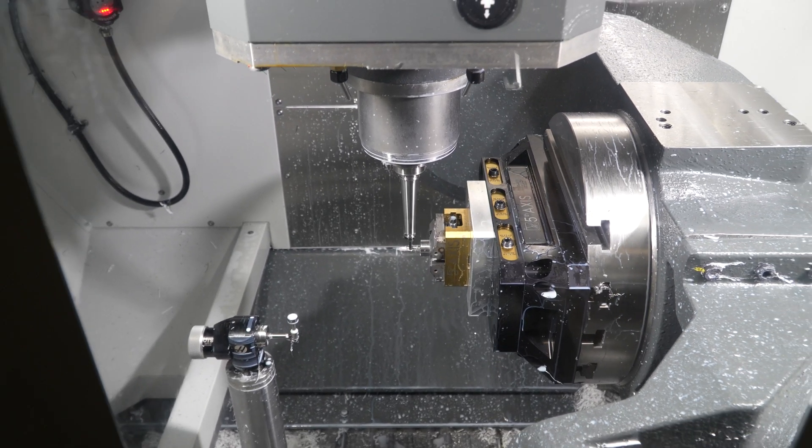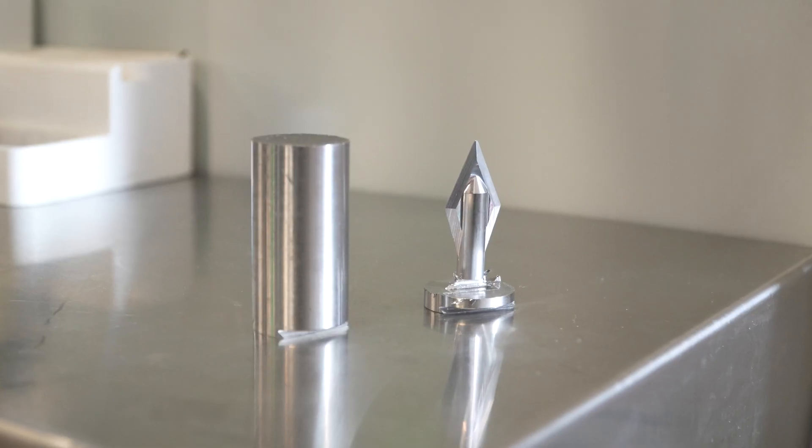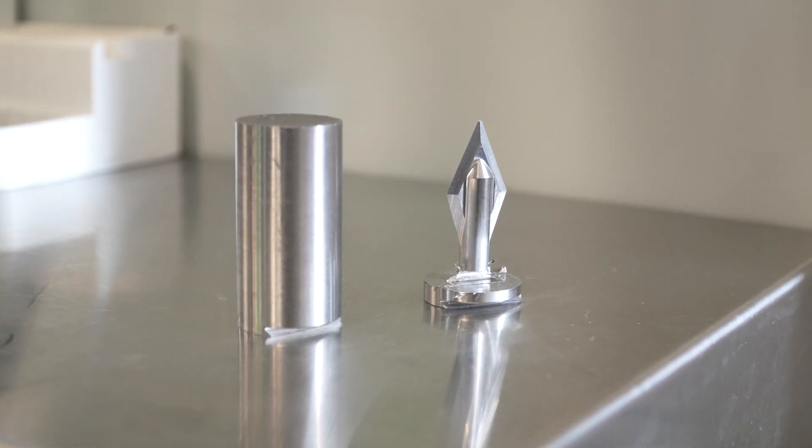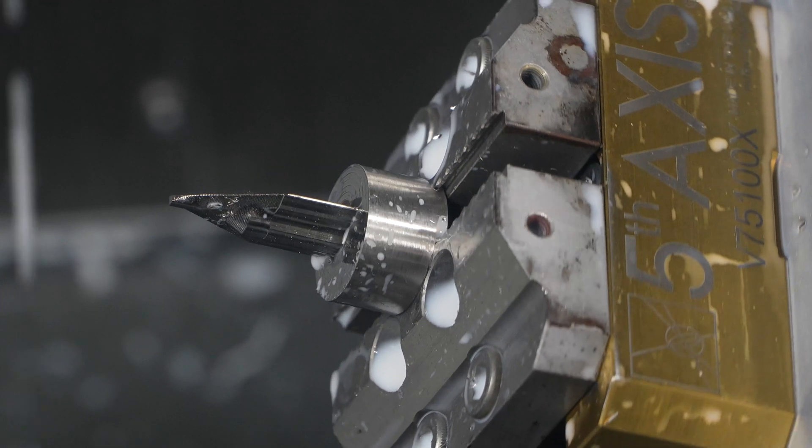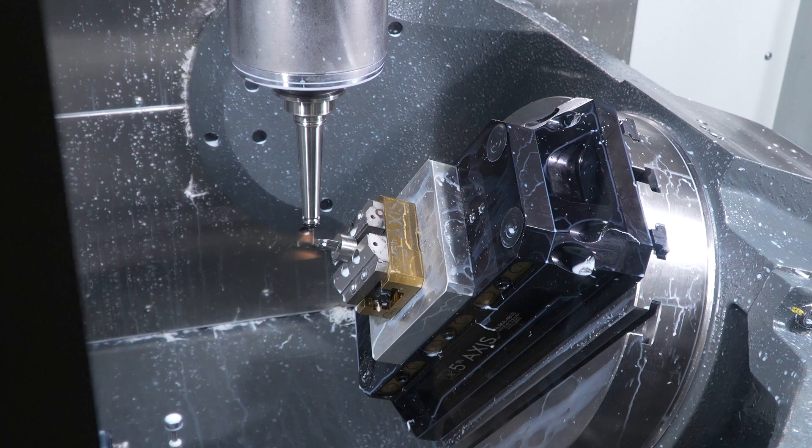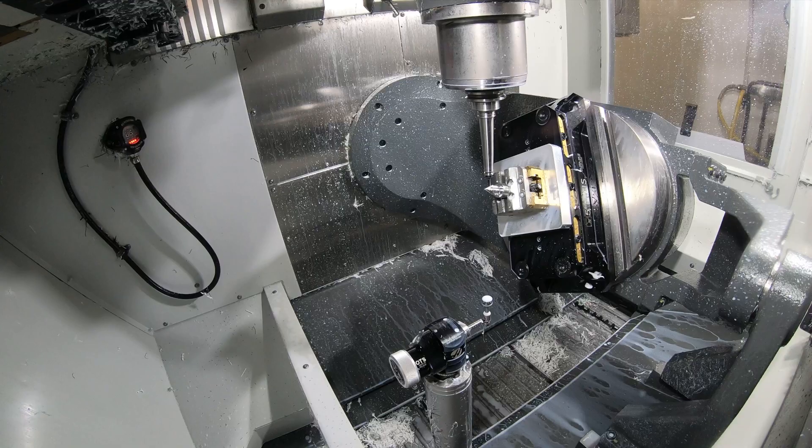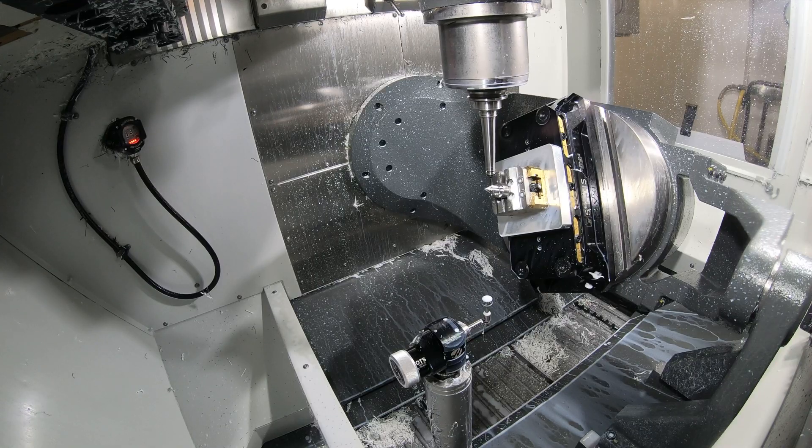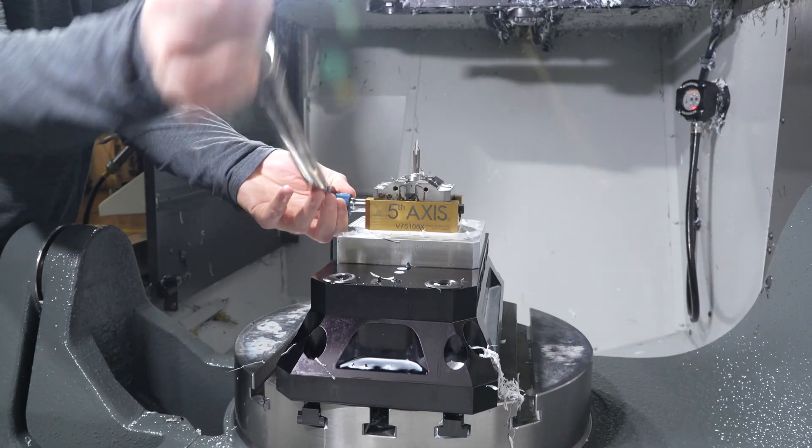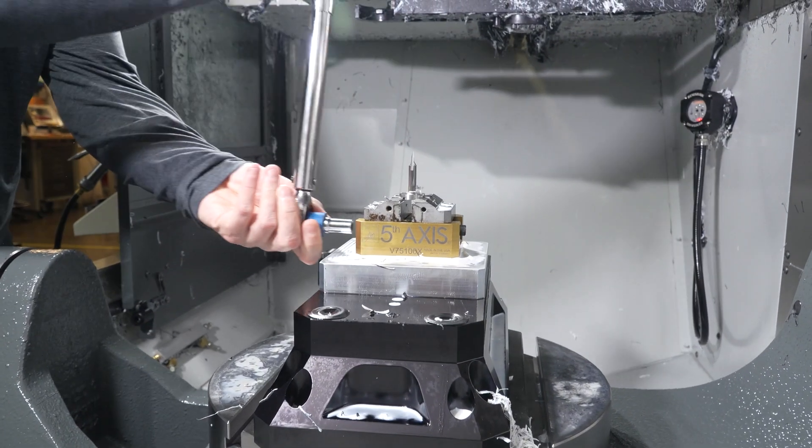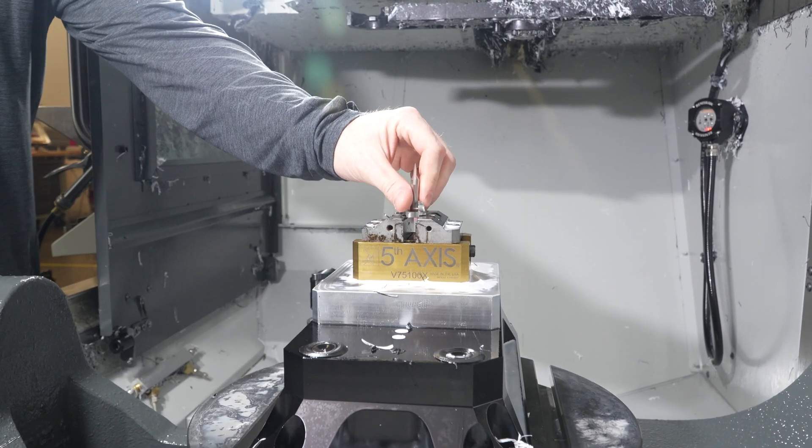The original design of this instrument called for the edges to be ground to maintain a specific level of sharpness. We were able to with the use of our Haas machine tool and our very good talent to come up with a way where we machine those edges complete in the machine and we no longer require the post-process grinding operation. So the part comes off of our Haas mill sharp enough to go into surgery.